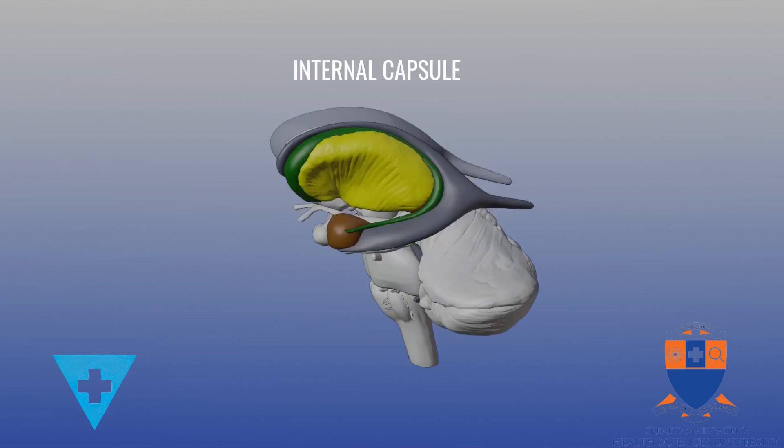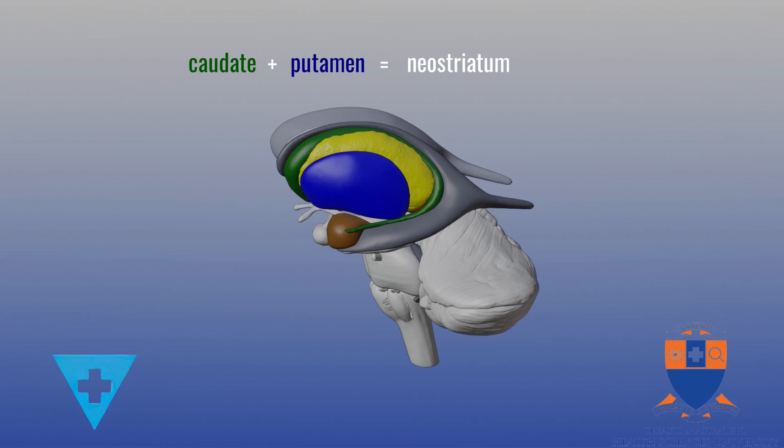The internal capsule connects the caudate lenticular grey stria to the lentiform and the caudate nuclei. Its striated look gives it the name corpus striatum. The globus pallidus is the paleostriatum and the caudate and putamen the neostriatum.